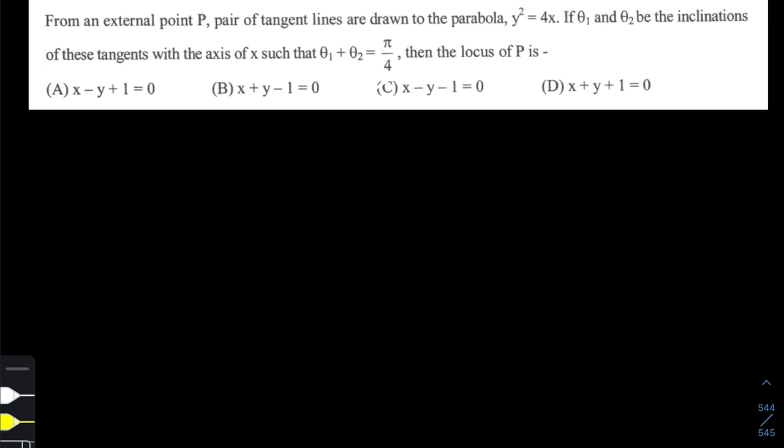The question says: from an external point P, pair of tangent lines are drawn to the parabola y² = 4x. If θ₁ and θ₂ be the inclination of these tangents with the axis of x such that θ₁ + θ₂ = π/4, then which of the following options represents the locus of point P?